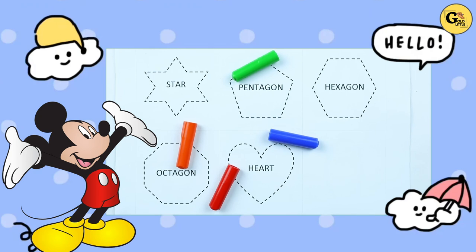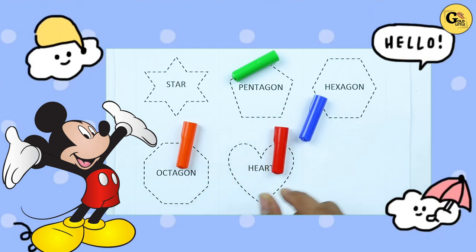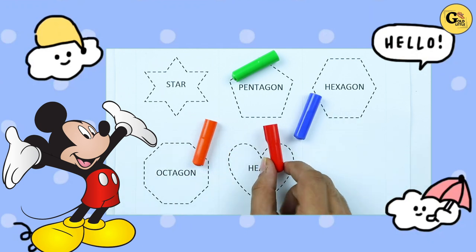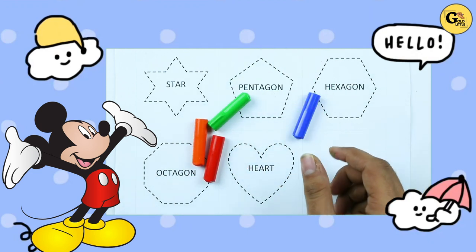Hello friends, today we learn shapes: star, pentagon, hexagon, octagon, and heart with colors. Blue color, orange color, red color, green color.